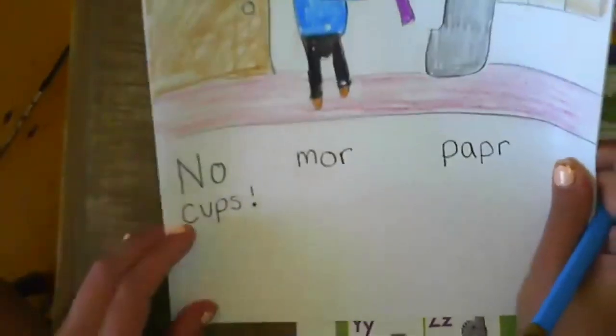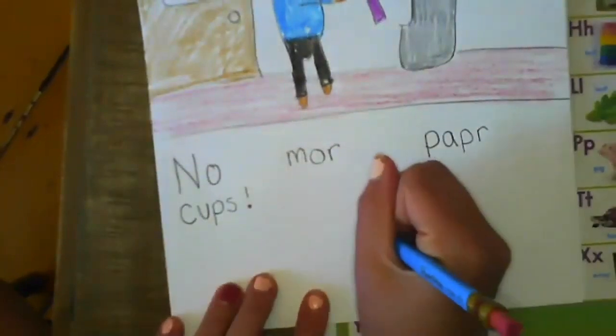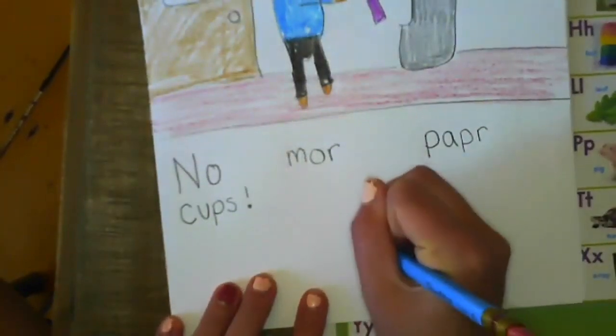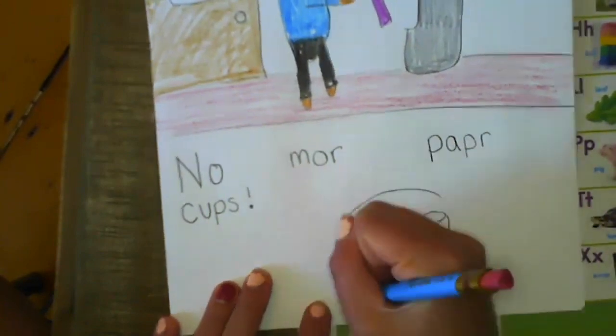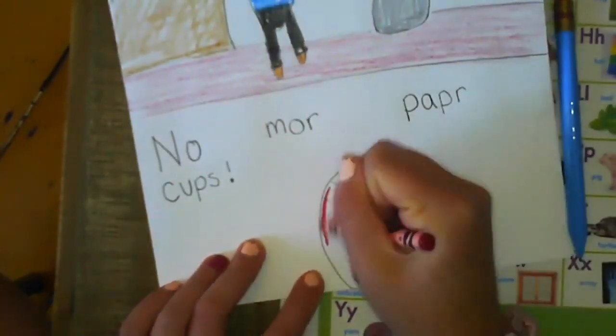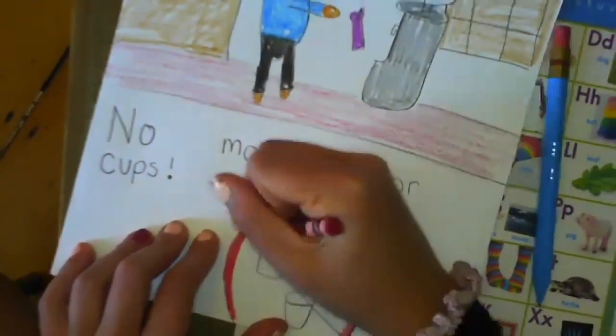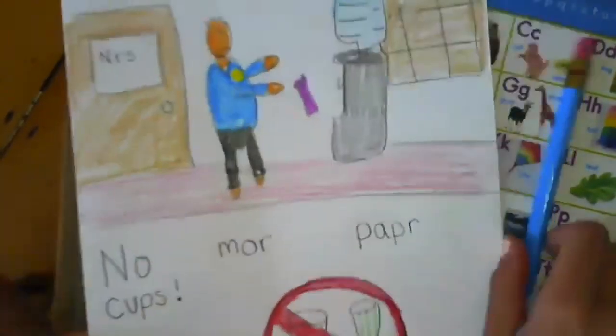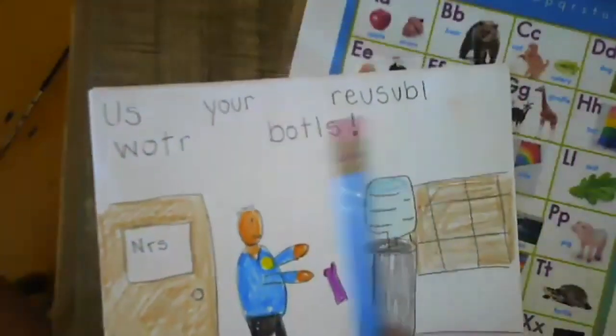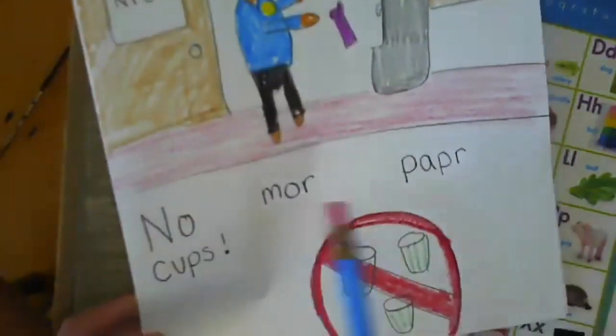And then I have a little bit of space down here. I'll draw another picture of like no more paper cups. Here are some paper cups. I'll draw a big cross out. Like that. There we go. Use your reusable water bottles. No more paper cups.